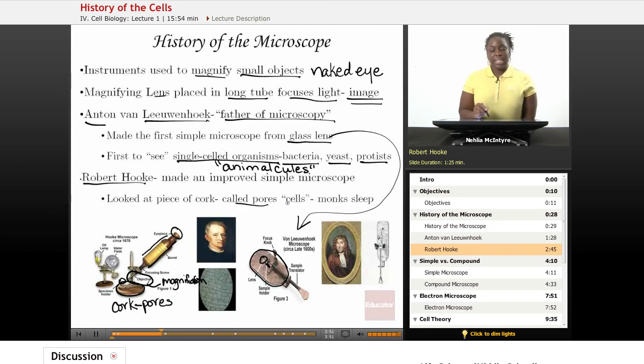and he was able to see the pores of that cork. And he looked at that, and he said that these pores should be called cells, because they reminded him of the rooms or cell blocks where monks sleep in a monastery. So that is where we get our name cells from. Robert Hooke actually coined that term cells.